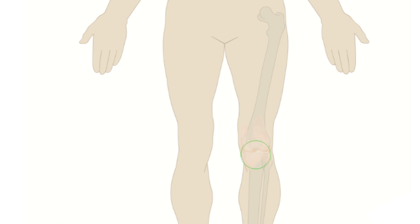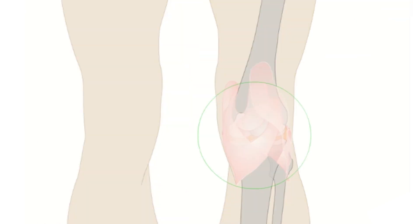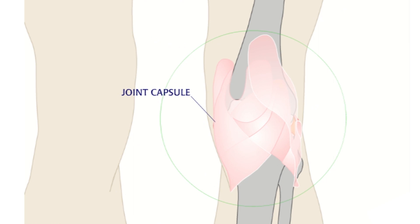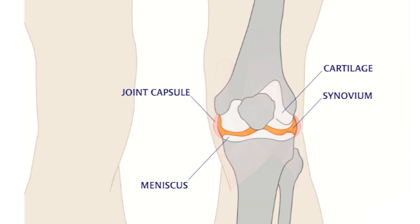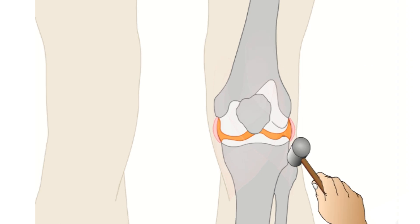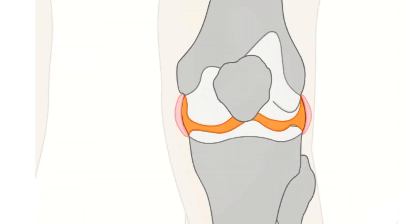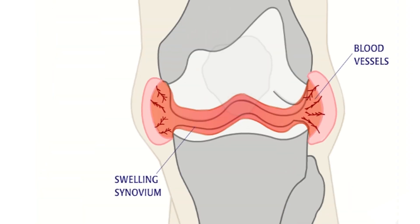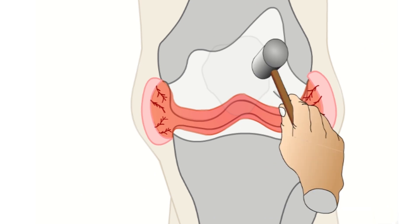Damage to the joints — mainly knees, elbows, and ankles — starts when the synovium, a thin lining inside the joint capsule, thickens to absorb blood lost from the vessels. As the synovium thickens, it also acquires more blood vessels that make the joint prone to further injury. Another injury means more blood to absorb, and the synovium thickens again. With frequent re-injuries, the synovium never shrinks and remains swollen.